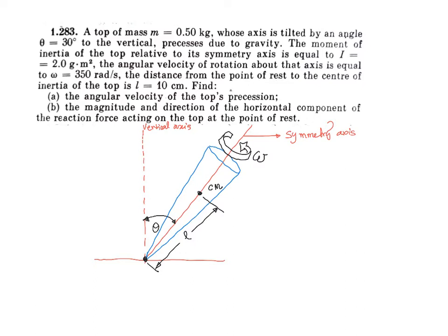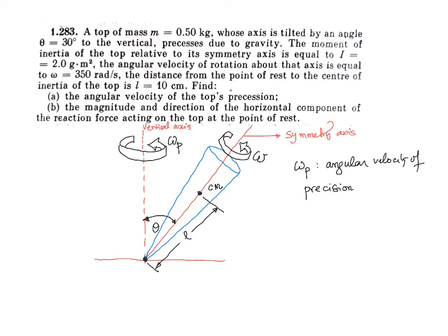The precession of the top occurs with a precession angular velocity, which we'll name ω_p. So ω_p is the angular velocity of precession. About the symmetry axis, the moment of inertia is capital I.